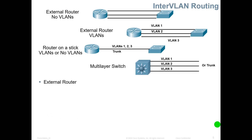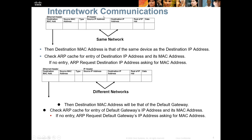So how does all of this work? It's going to look at the source and destination address in the headers and see if they are on the same network. If they are, it will process. If not, it will try to send it to a default gateway. If the destination MAC address matches the destination IP, it will check the ARP cache. If no entry is there, an ARP request will ask for the MAC address. If they're on different networks, the destination MAC will be that of the default gateway, and it will check the ARP cache for the default gateway IP address, sending an ARP request if no entry exists.